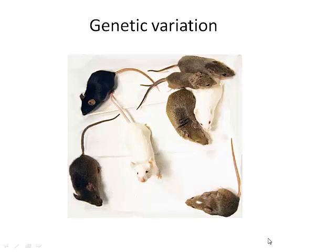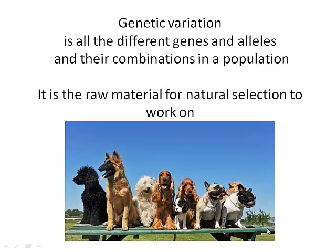In this clip we're going to look at genetic variation, in particular where it comes from — how an individual is different from others in a population. Genetic variation is simply all the alleles in a population and their combinations, how they're all mixed up and shuffled together through sexual reproduction. It's the raw material for natural selection to work on, because we're all different, some individuals will survive in a particular environment to breed better than others. And that's the power of natural selection and genetic variation.